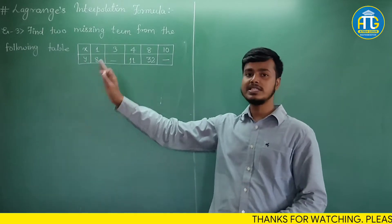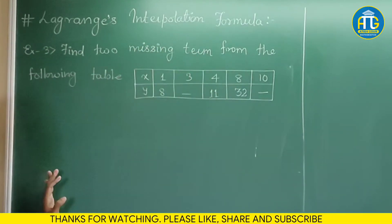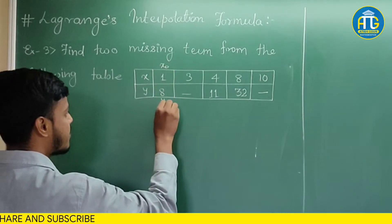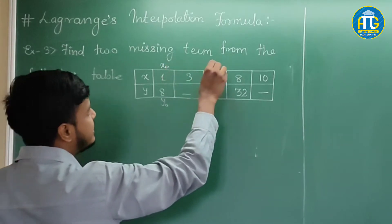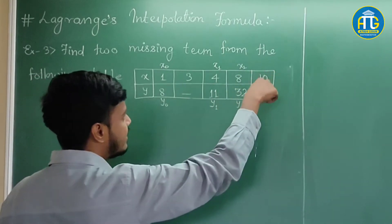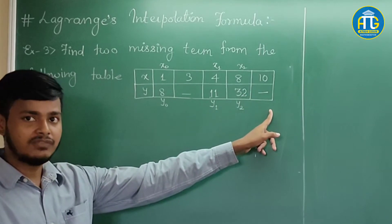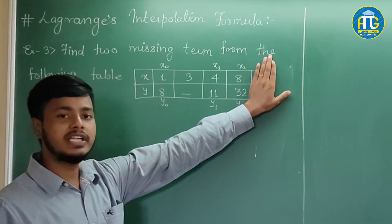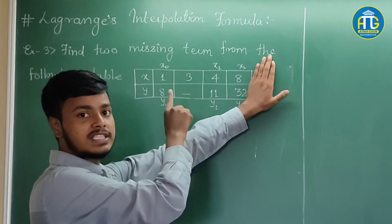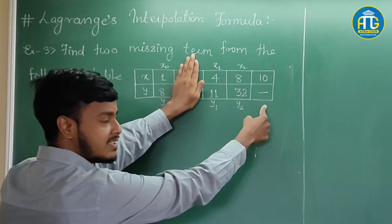Let us see how to solve such problems. This example says: find two missing terms from the given table. The very first thing you need to do is naming. I will name this as x0 and the corresponding value y0. We have to find out one value, so we can neglect it for now — no naming. Then x1, y1, x2, y2, and that we also have to find out. Now, there are two missing terms. Forget about the second one for now — this becomes a problem of a single missing term. We will solve for the first missing term, and once we get that value, we will forget about it and use the remaining data to find out the second missing term.